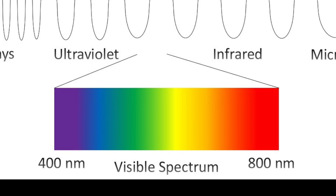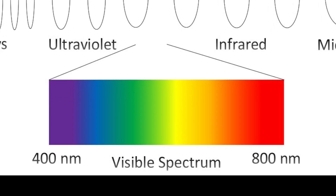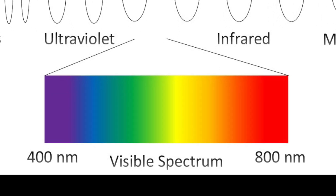Visible light is composed of wavelengths between approximately 400 and 800 nanometers, which we visually perceive as hues of purple, blue, green, yellow, orange, and red.